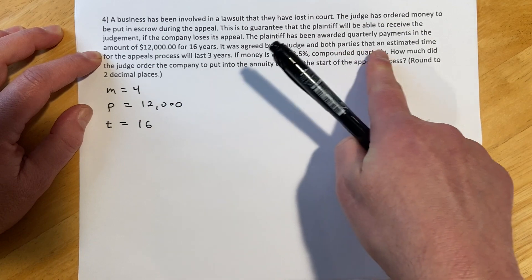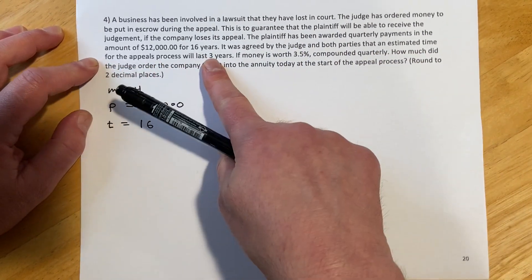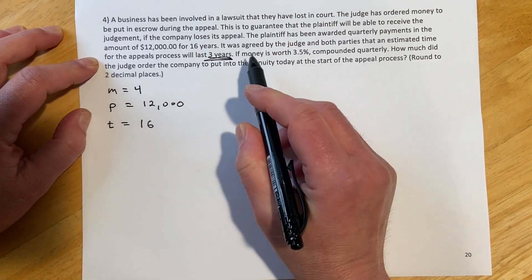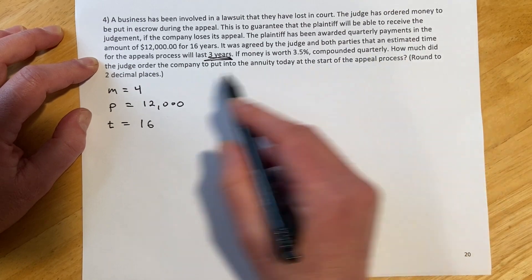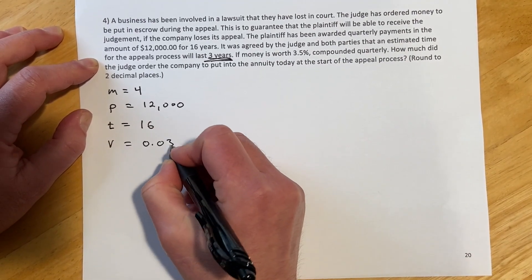It was agreed by the judge and both parties that an estimated time for the appeals process would be about three years. So I'm just going to underline that, we'll come back to that in a second. If the money is worth 3.5% compounded quarterly, we already got that. So the R is 0.035.